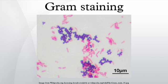Gram staining, also called Gram's method, is a method of differentiating bacterial species into two large groups. The name comes from its inventor, Hans Christian Gram. Gram staining differentiates bacteria by the chemical and physical properties of their cell walls by detecting peptidoglycan, which is present in a thick layer in Gram-positive bacteria.